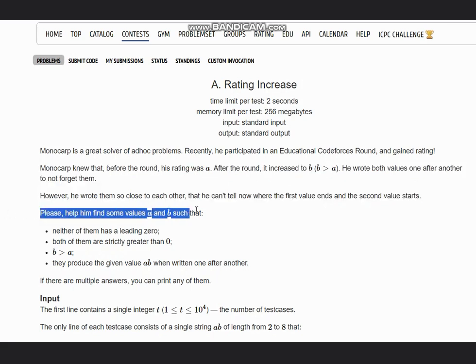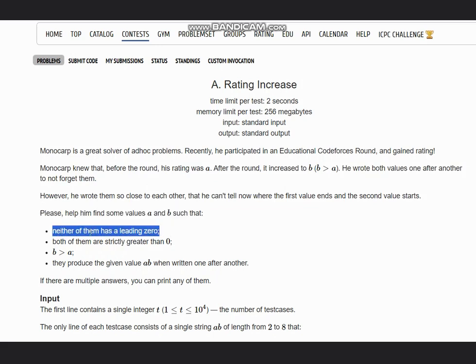Please help him find some values A and B such that neither of them has a leading zero, both of them are strictly greater than zero, B is greater than A, and they produce the same value AB when written one after another.